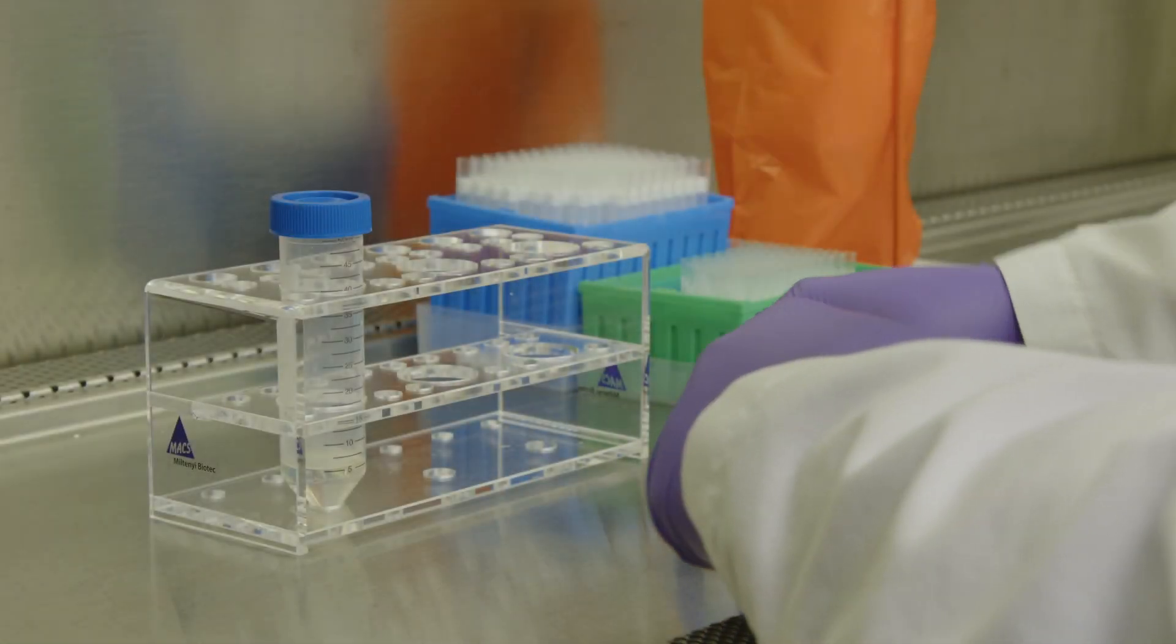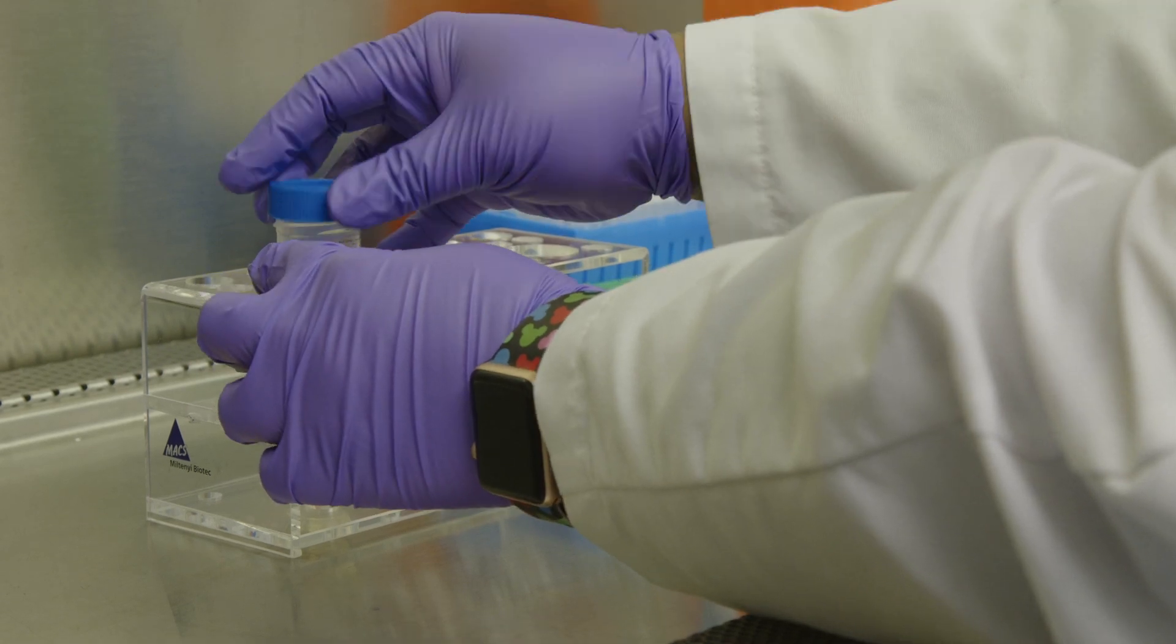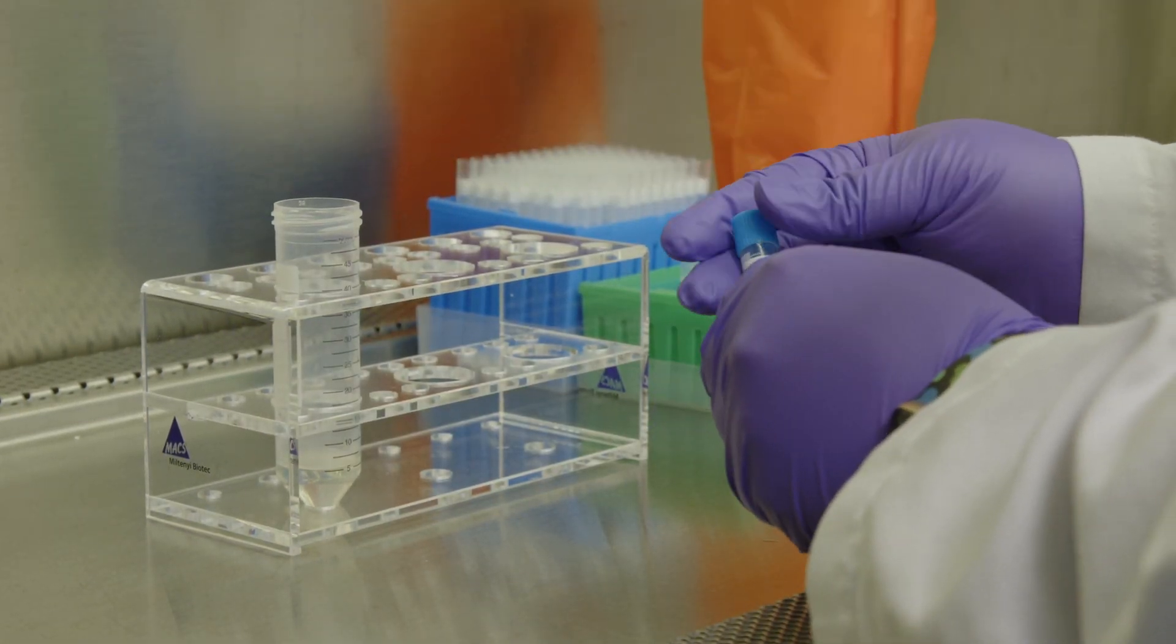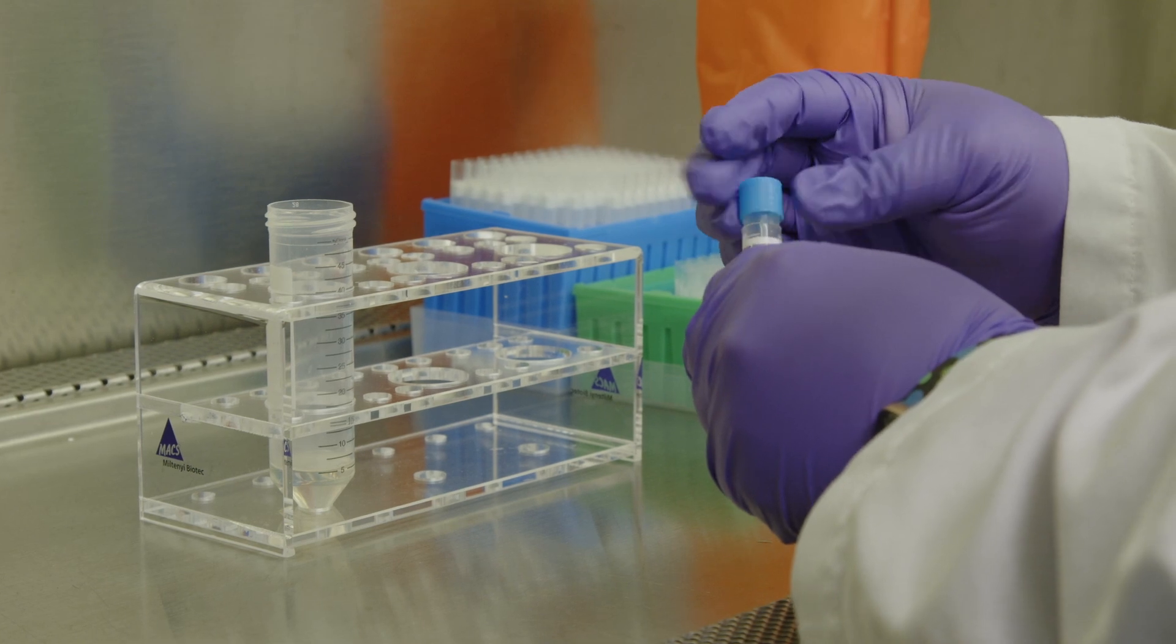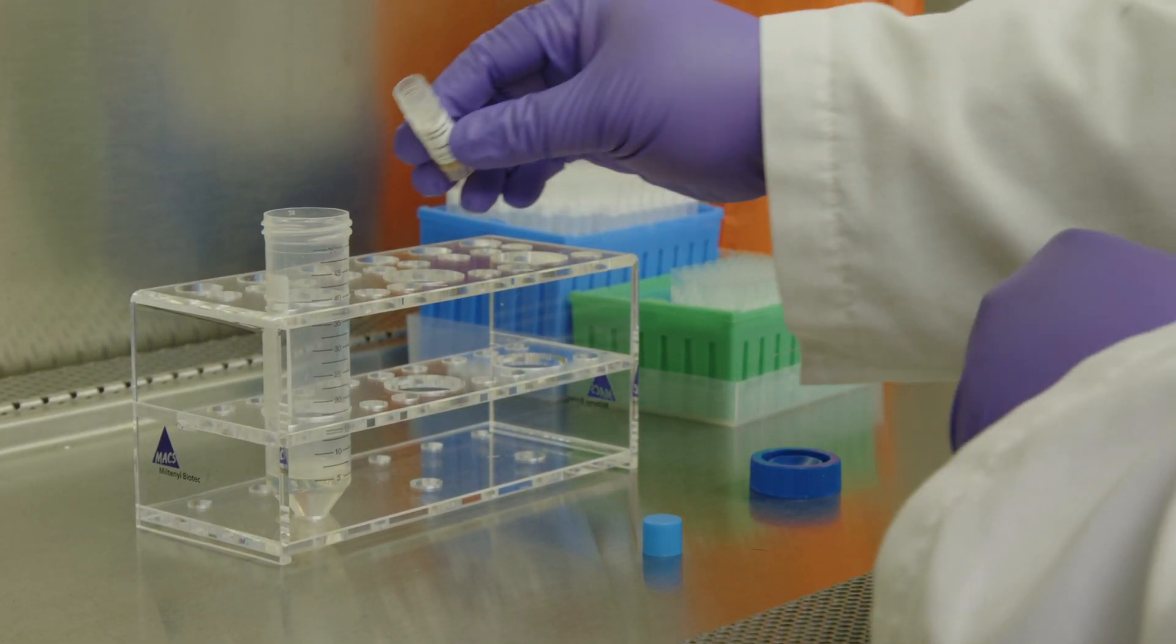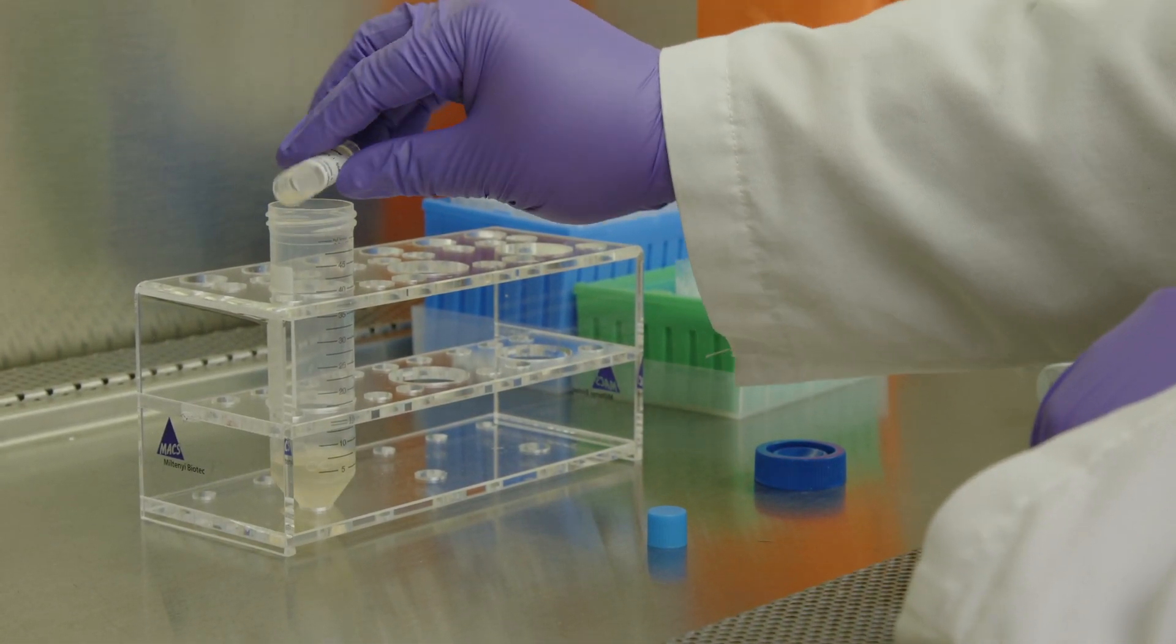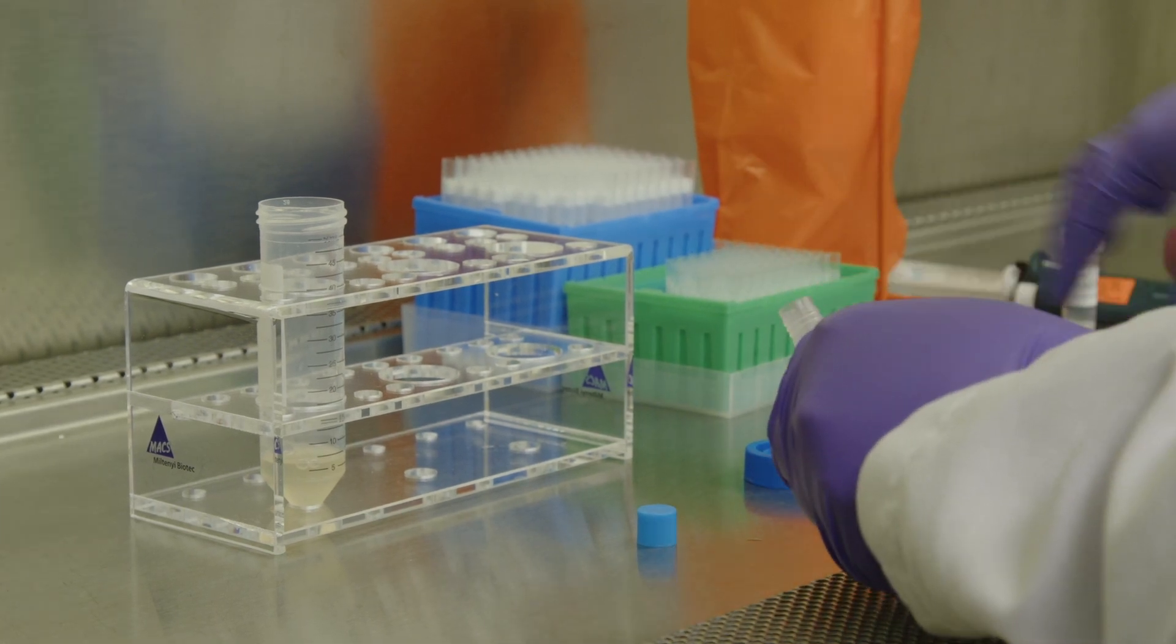Take the cryovial and the conical tube with 5 milliliters of completed medium to a biosafety hood to maintain sterility. Pour the vial of cells into the 50 milliliter conical tube of pre-warmed In Vitro Grow CP medium.